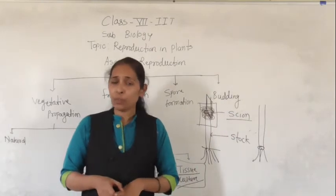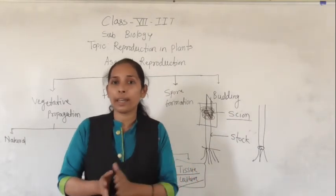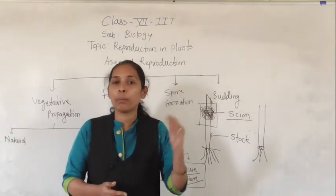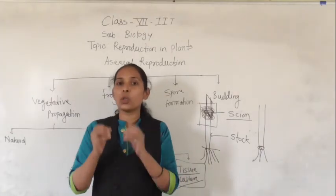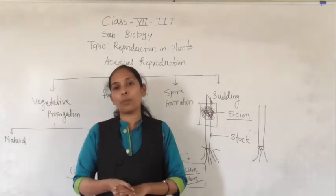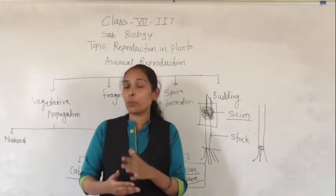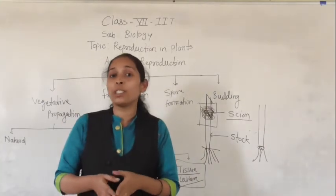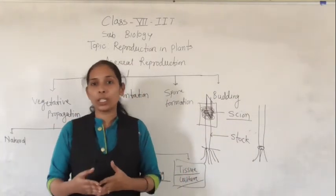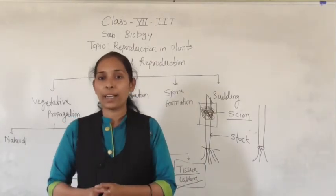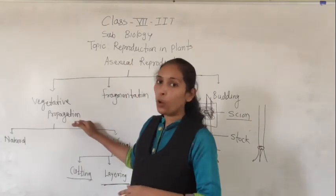With the help of vegetative propagation, it is possible to transfer all the characters from parent plants to offspring plants. The new plant formed is the exact copy of the parent plant. Vegetative propagation is also helpful for plants which don't produce seeds, for example banana and sugarcane — these are plants we can reproduce using vegetative propagation.